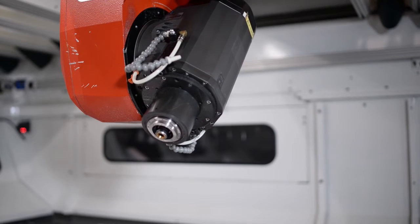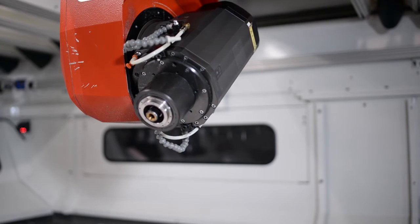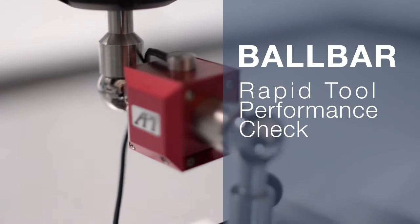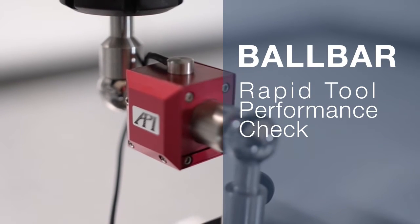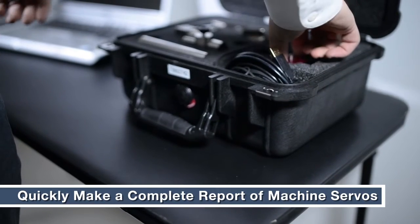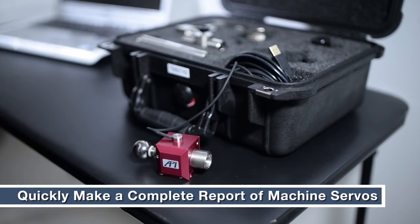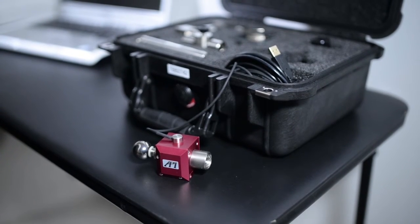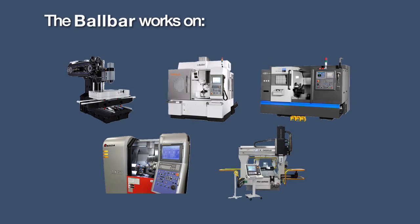Is regular machine maintenance too long, costly, and just impractical to implement in your shop? Good thing you have the API ball bar. The ball bar quickly and precisely measures the performance of your servos well in advance before any failure happens, allowing you to minimize downtime and cost. It's quick, easy to use, and can save your shop thousands of dollars.